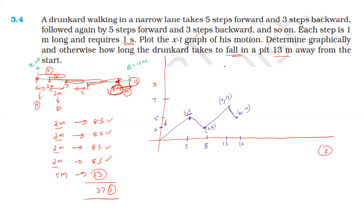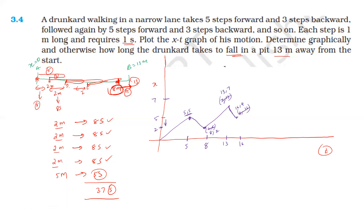Continuing: at 8 seconds — 2 meters; at 16 seconds — 4 meters. Then 5 steps forward from 4 meters: at 21 seconds the position is 9 meters. Then 3 steps backward: at 24 seconds the position is 6 meters. So the next plotted points are (21, 9) and (24, 6).